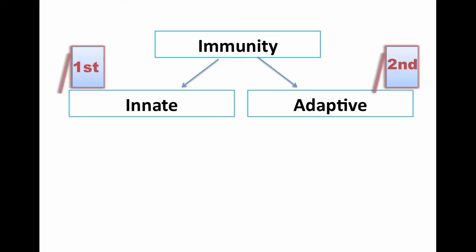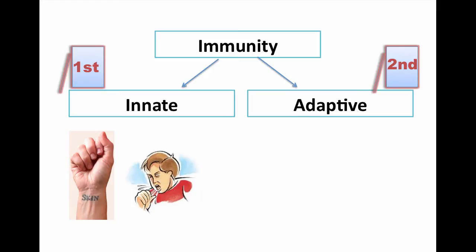Your innate immunity includes your skin which protects you from all microbes, your mucous membrane, and mechanical mechanisms like coughing, sneezing, and vomiting. The normal flora is also considered a part of your innate immunity. Innate immunity is not specific.